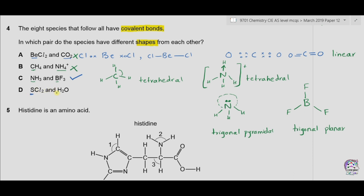Option D is sulfur dichloride and water. Both sulfur and oxygen are from group six of the periodic table, so both have six electrons in the outermost shell. Sulfur makes two covalent bonds with chlorine and has two lone pairs. The structure of water is also similar — oxygen has two lone pairs and forms two single covalent bonds with hydrogen. Both structures are bent. So option D is incorrect. The only correct option is C.